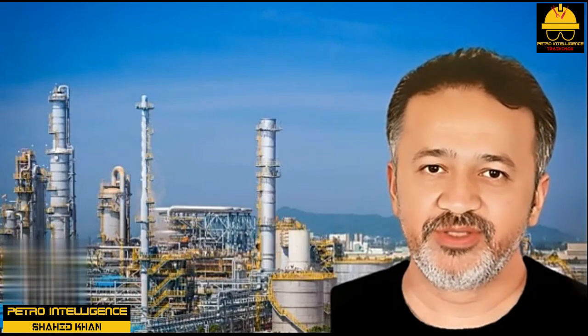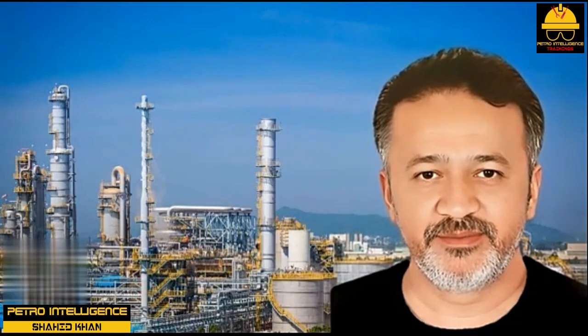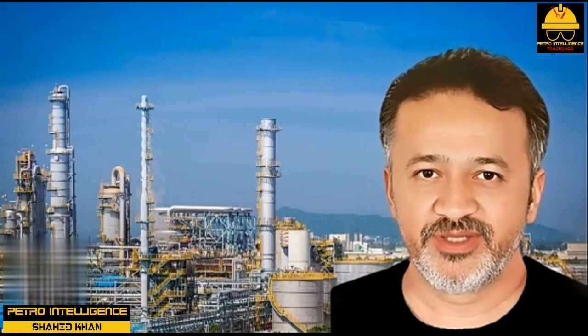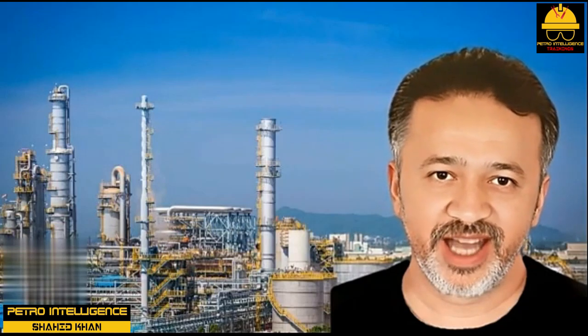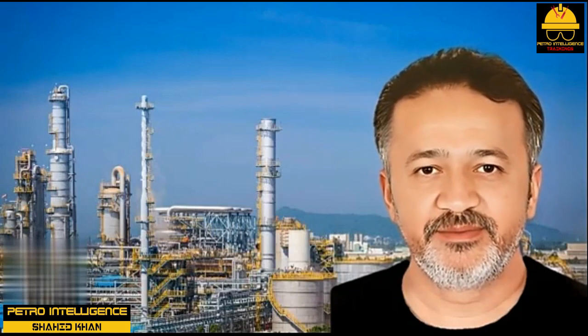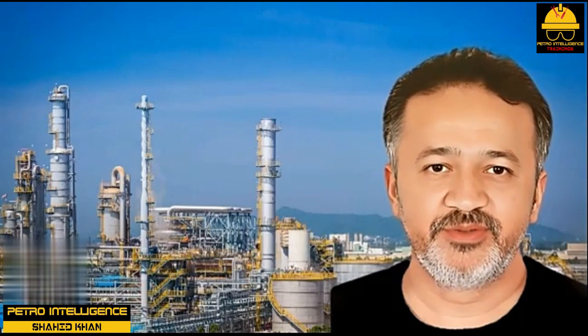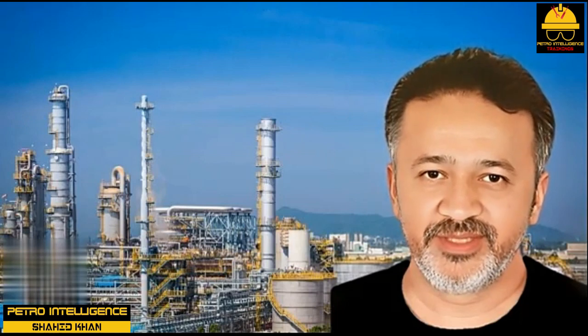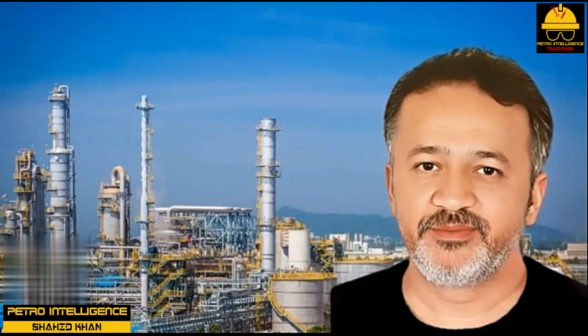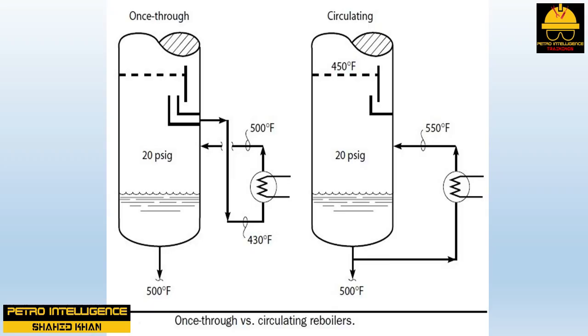Returning the effluent from a once-through reboiler with a vertical baffle to the cold side of the tower's bottom would make it work more like a circulating reboiler — which is worse. The once-through reboiler functions as the bottom theoretical separation stage of the tower. The circulating reboiler does not, because a portion of its effluent back-mixes to its feed inlet. This back-mixing ruins the separation that can otherwise be achieved. Regardless of reboiler type, the tower bottom product temperature must be the same to meet product specifications.